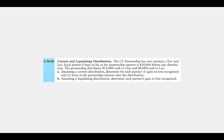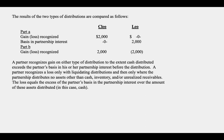For Clio, the cash received exceeds her basis so we're going to have a gain. For Leo, the cash does not exceed the basis so there's no gain. Clio recognizes a two thousand dollar gain because the cash she received was twelve thousand and her basis was ten thousand. Leo recognizes no gain, but Leo's basis in the partnership interest is now two thousand because we subtract distributions from basis. Clio's basis is zero.